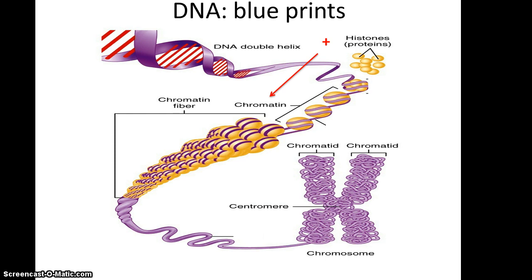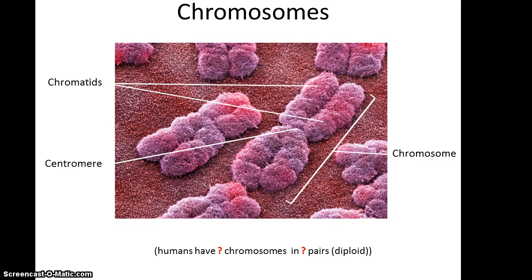Chromosomes are typically depicted as an X shape, with two sister chromatids connected at the centromere. Each sister chromatid is a complete copy of that chromosome, so you have two copies in one chromosome. An electron microscope view confirms that many chromosomes look like X's with the two sister chromatids connected at the centromere. Humans have 46 chromosomes found in pairs, meaning 23 pairs of chromosomes, and are therefore referred to as diploid — two copies of each chromosome.